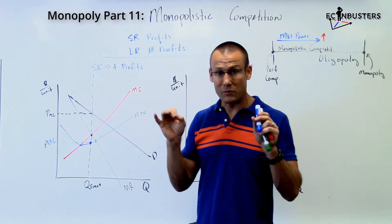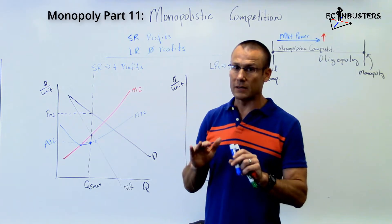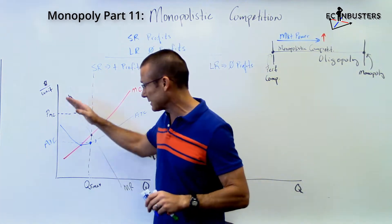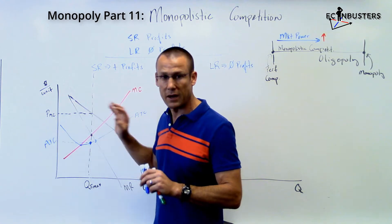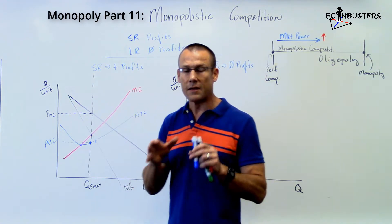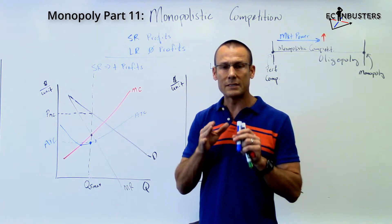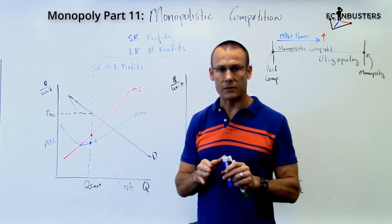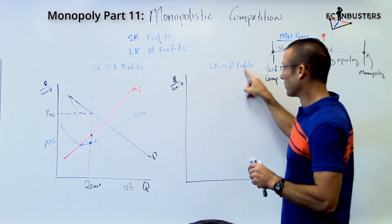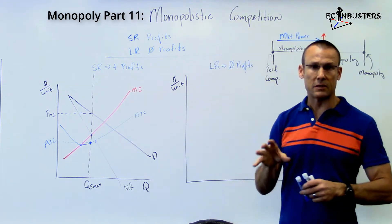On top of that, because we've got close substitutes, the demand curve also flattens — think elasticity. So it's shifting left and getting flatter, and that's going to happen until we squeeze out all the profits. In the long run, monopolistic competition firms make zero economic profits.